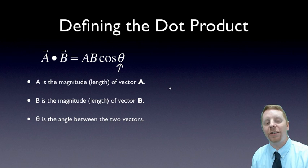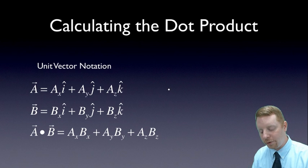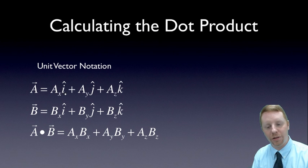So how do you actually calculate a dot product given two vectors? Using unit vector notation, we can look at the A vector defined as the x component of A times i-hat, the unit vector in the x direction, plus the y component of A times j-hat, the unit vector in the y direction, plus the z component of A times k-hat, the unit vector in the z direction.